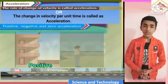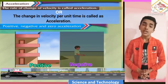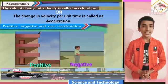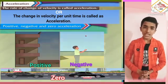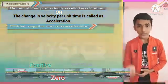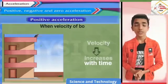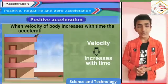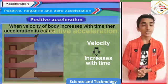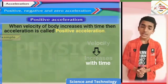Acceleration may be positive, negative, or zero. Let us study positive, negative, and zero acceleration one by one. First, positive acceleration: when the velocity of a body increases with time, then acceleration is called as positive acceleration.